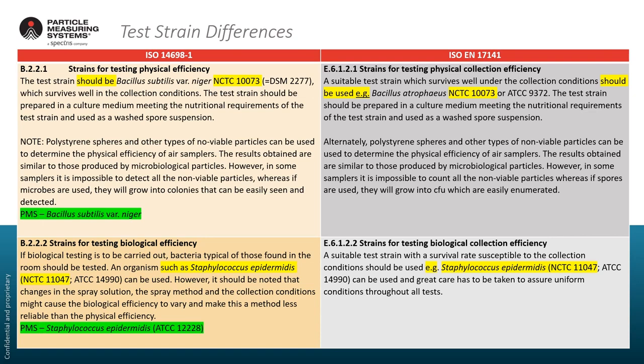The strains used for both tests are the same, with a little bit of language change — it should be Bacillus subtilis in one and Bacillus atrophaeus in the other, for example. The EN 17141 leaves a little wiggle room to pick something suitable that meets site requirements. In both instances, the test strains used by Particle Measuring Systems on our validation documents meet the specifications for both standards.